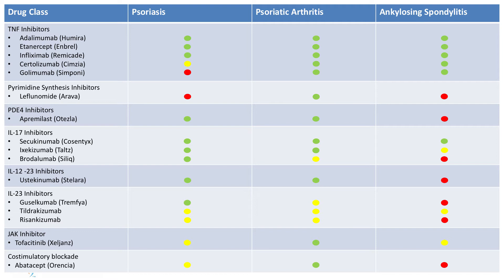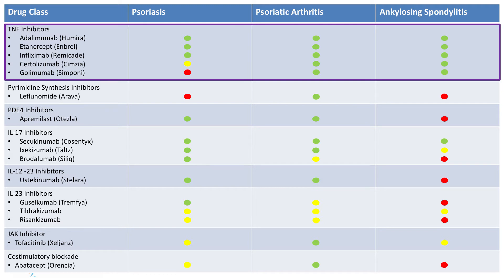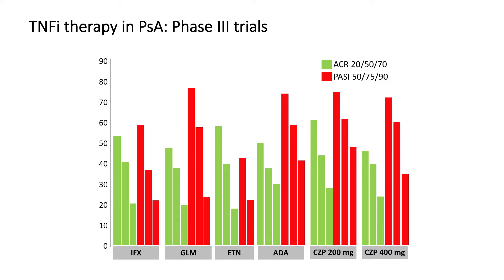The green bars here represent the joint scores across all anti-TNFs. What I like about this slide is when I superimpose the skin scores — the skin scores are all higher than the joint scores. This reminds us that these agents are doing a lot better at clearing skin than clearing joints. So there is room to grow for our treatments.